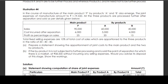Cost incurred after separation: main product Rs 6,000, by-product A Rs 5,000, by-product B Rs 4,000. Profit as percentage on sales: main product 25%, by-product A 20%, by-product B 15%.